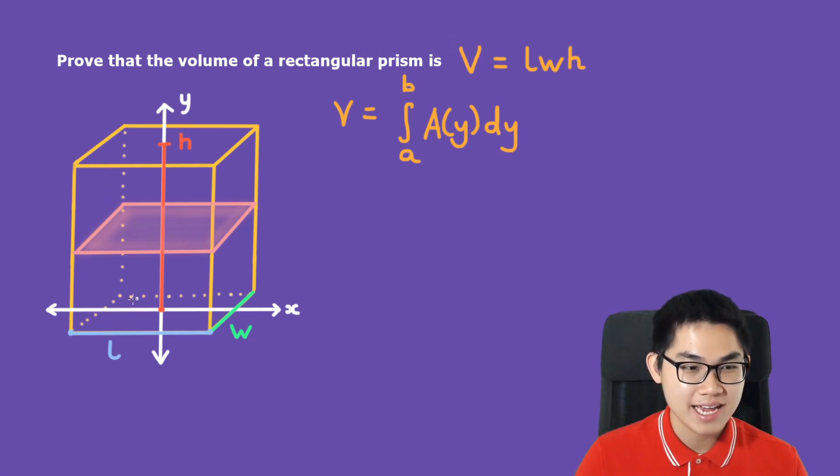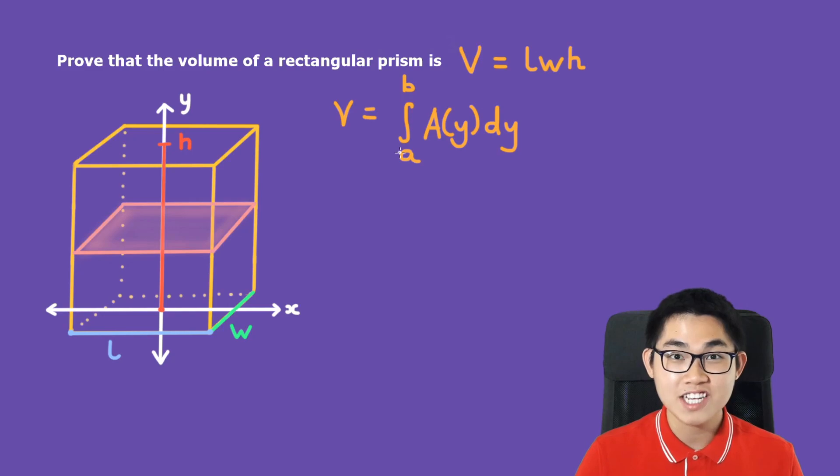You can think of a cross section as a slice of bread. The formula wants us to find the area of this cross section, and then we add it to the area of this cross section, and then this one, and we keep doing it until we reach the very top. The integral sign means we add all of those areas of the cross sections together, which gives us the volume.